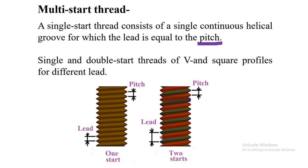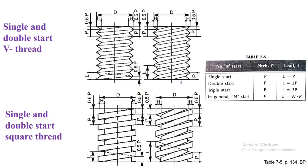To achieve a larger lead with a single thread is not geometrically possible without a thinner core, which would weaken the bolt. Therefore, two or more starts are used to achieve a higher lead while keeping the core large enough for strength. For single start, lead equals P; for double start, lead equals 2P, and so on. This applies to both V-threads and square threads.